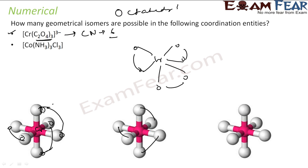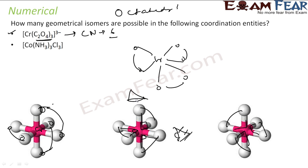This is octahedral. In this case, if you see, there is no geometrical isomer possible — because all three bidentate ligands are the same. If you draw it from different angles, they are all the same structure due to symmetry. So there are no geometrical isomers for Cr(C2O4)3 3−.